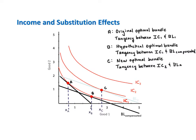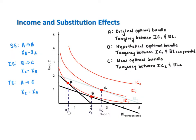To mathematically decompose the total effect of a price change into the substitution and income effects, we need to mathematically calculate bundles A, B, and C. Once we have those bundles, the substitution effect on X can be calculated by taking the value of X at bundle B and subtracting the value of X at bundle A. The income effect on X is the value of X at bundle C minus the value of X at bundle B. And the total effect on X is the value of X at bundle C minus the value of X at bundle A.